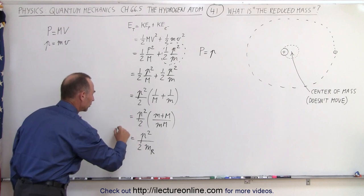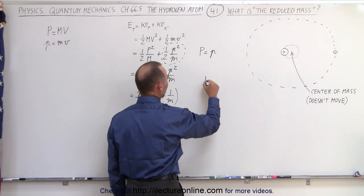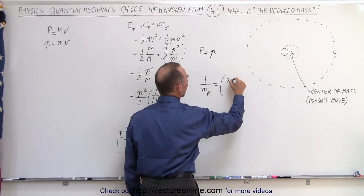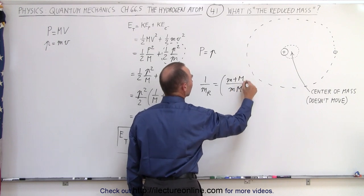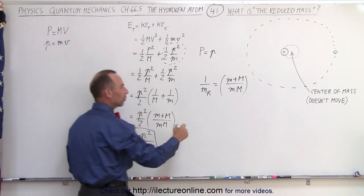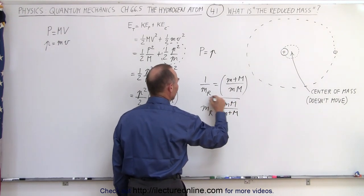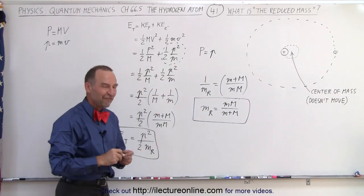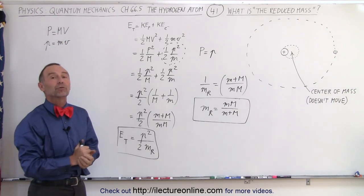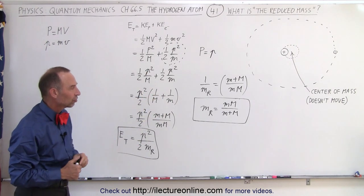So the total energy equals p squared over 2 M sub r. From this we see that 1 over the reduced mass equals little m plus big M over m times big M. Flipping that over, the reduced mass is equal to m times big M over m plus big M. This is the effective or reduced mass — the mass the electron seems to have if the nucleus of the atom didn't move at all. That's the mass that will give us a much more accurate value for the wavelengths of the transitions of the electrons.